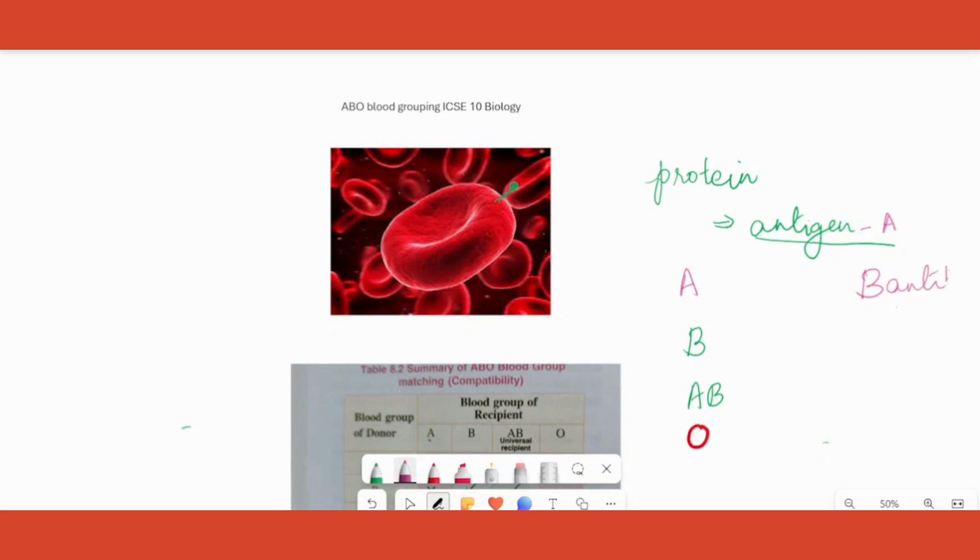If antigen A is present on the surface of the RBC, there is a corresponding antibody B in the plasma. If B is on the surface of RBC, the antibody will be A. If both antigens are present, no antibody will be present. If zero antigens are present, meaning blood group O, the antibody present will be both A and B.